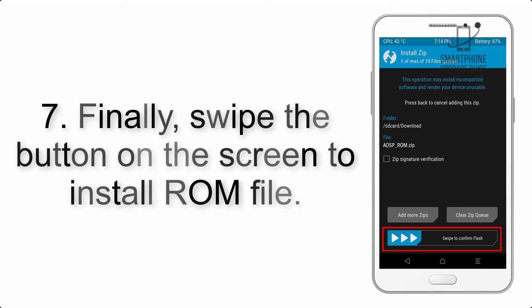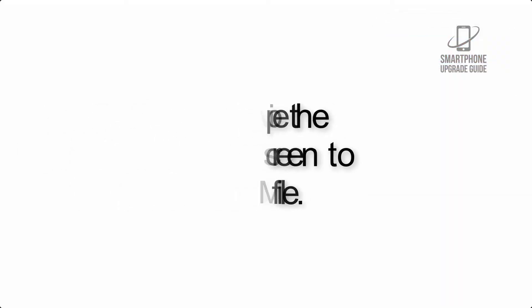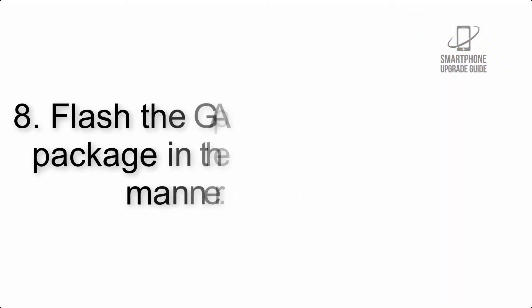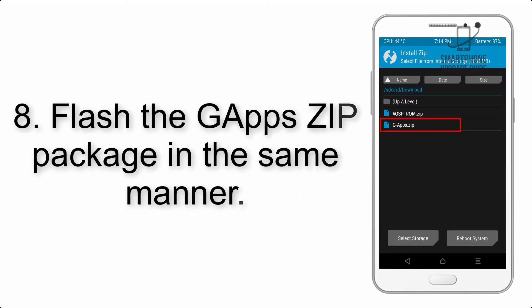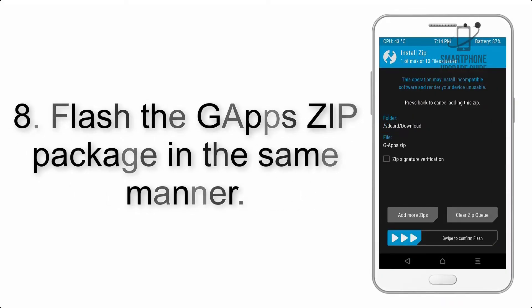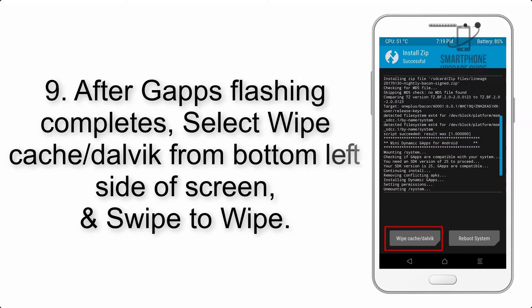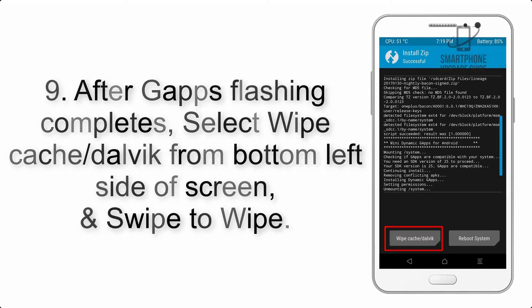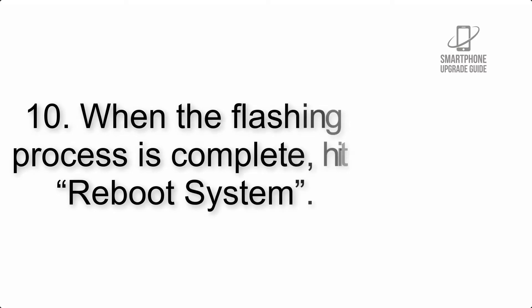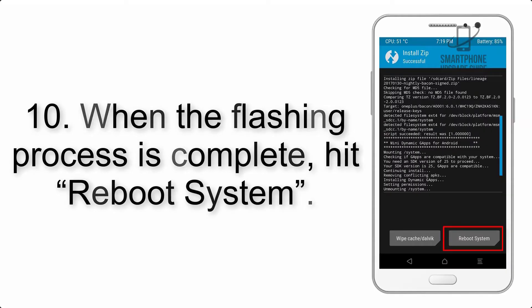Step 7: Swipe the button on the screen to install the ROM file. Step 8: Flash the GApps zip package in the same manner. Step 9: After GApps flashing completes, select Wipe Cache and Dalvik from the bottom left side of the screen and swipe to wipe.